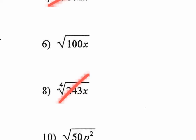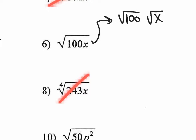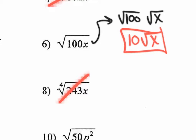Number 6: the square root of 100x. Let's split the root — the square root of 100 and the square root of x. The square root of 100 is 10. The square root of x, you just bring it down. The answer is 10√x. Easy.